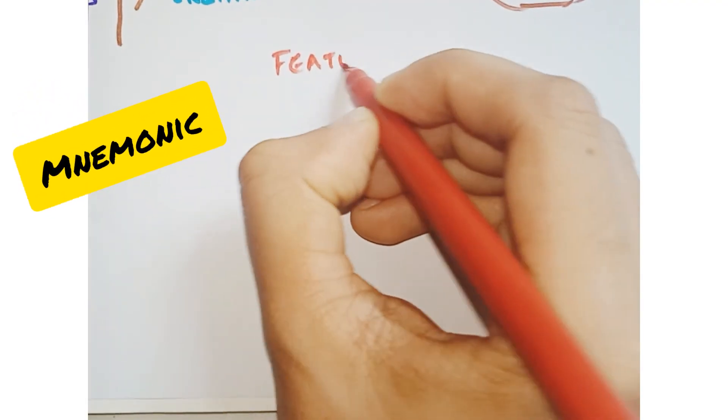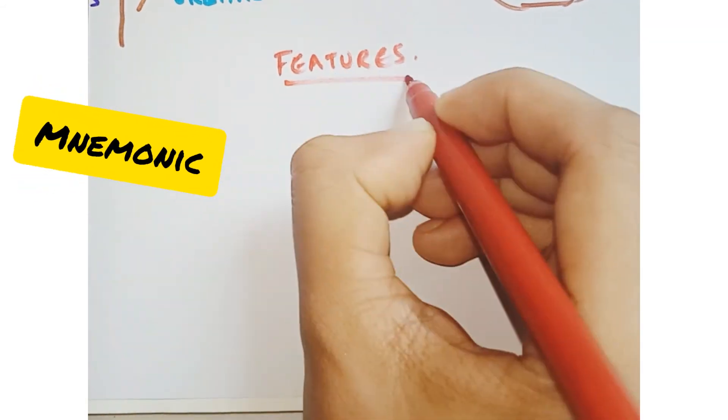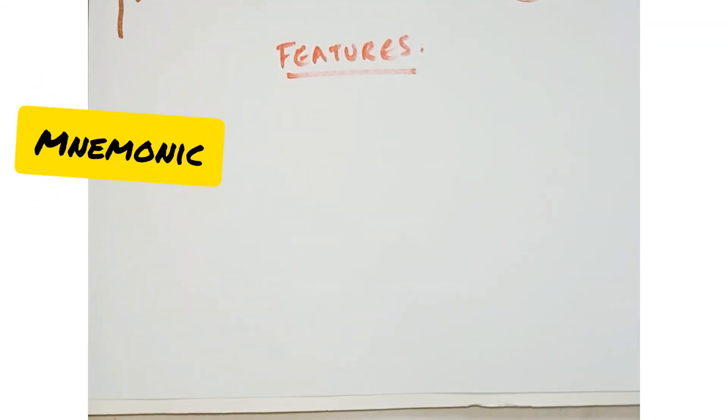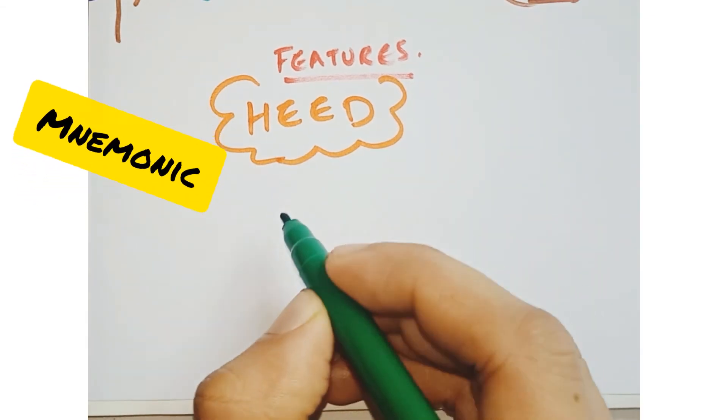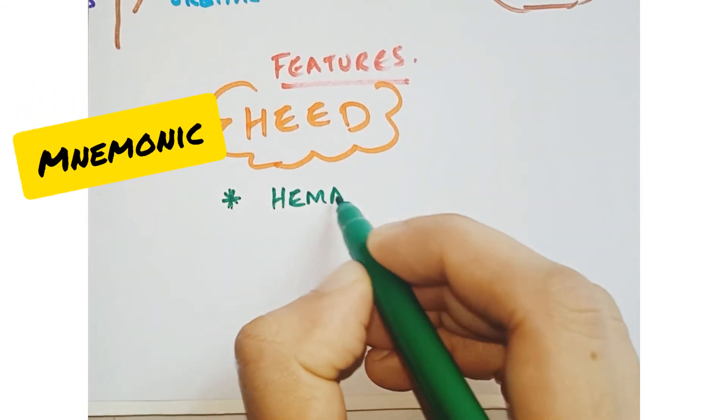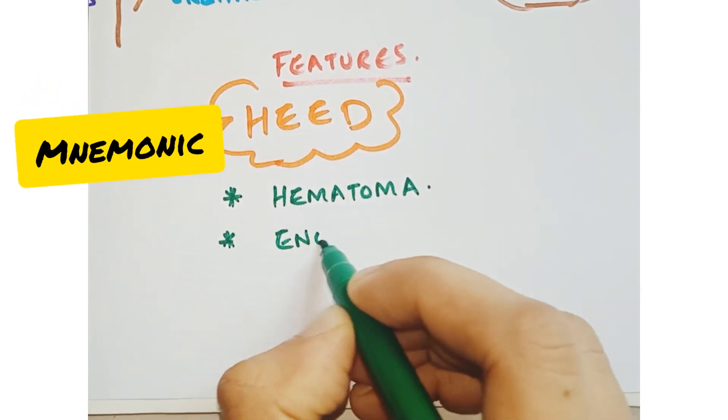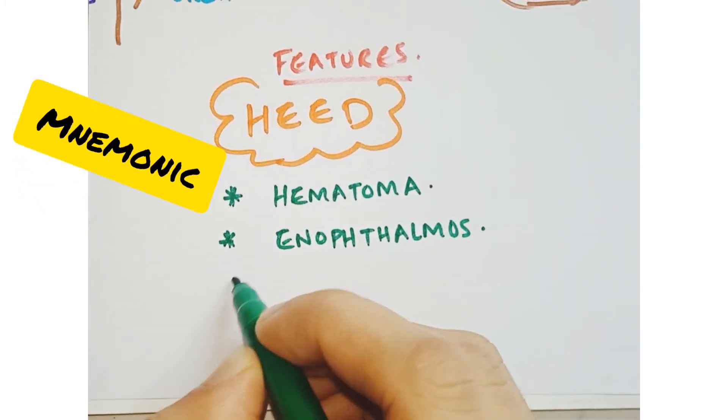Along with this, let's have a look at the clinical features of this fracture. Remember the mnemonic HEED, which simply means careful attention. Here, H stands for hematoma, E for enophthalmos, another E for orbital and periorbital edema, and